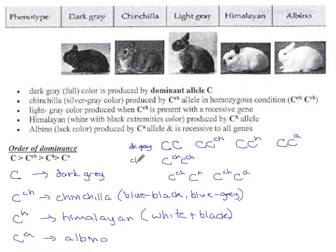Now, they say you only get chinchilla if it's homozygous, so I'm actually going to split this line up. Only with the double, with double C^ch do you get chinchilla. If you have C^ch C^h, that produces light gray. They say light gray color is produced when C^ch is present with something recessive. So either of these is something that's recessive to C^ch. Either of these would be listed as dark gray.